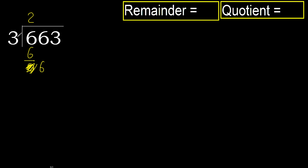Next digit: 6. 3 multiplied by 2 is 6. 6 minus 6 equals 0.